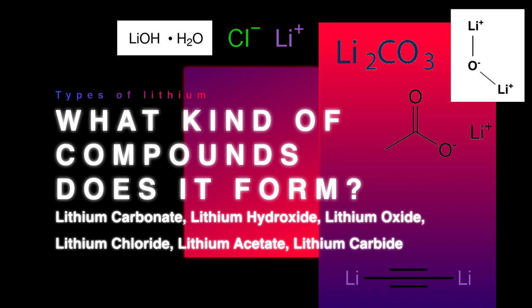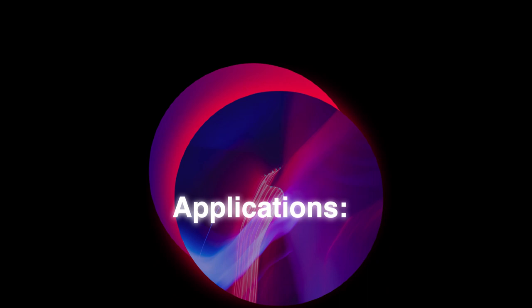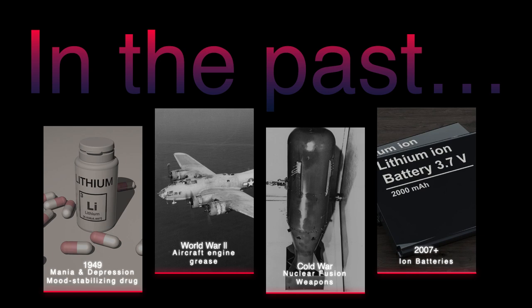In 1949, Australian psychiatrist John Cade used lithium to treat mania and depression, which became popular in Europe and the USA. The first major application of lithium was in high-temperature grease for plane engines, like during World War II. The demand for lithium rose during the Cold War because lithium was being used to produce nuclear fusion weapons. Finally, in 2007, the development of lithium-ion batteries became the dominant use of lithium.